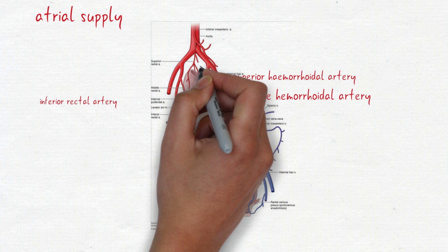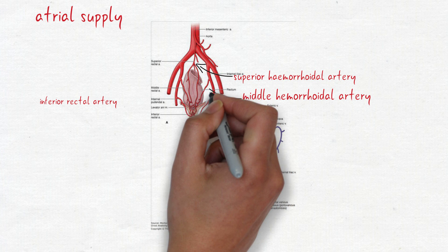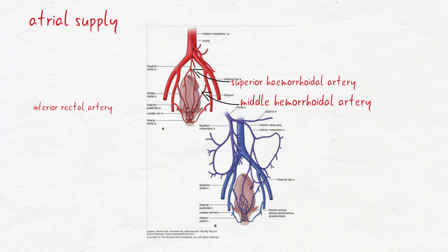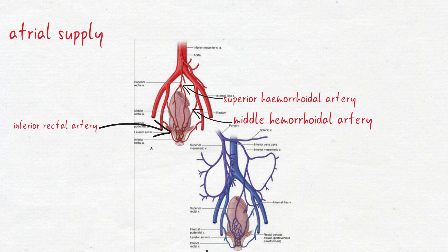Superior hemorrhoidal artery is a branch of superior rectal artery and continuation of inferior mesenteric artery. Middle hemorrhoidal artery is a branch of internal iliac artery. Whereas inferior rectal artery is a branch of internal pudendal artery.